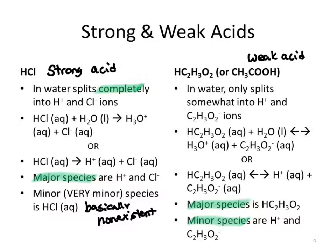In solution, we're only going to get a little bit of ionization — we won't see much hydrogen ion or acetate ion. We're mostly going to have intact acetic acid molecules left, as we saw with the beaker illustration in our 9.2 videos comparing hydrochloric acid and acetic acid as electrolytes. Strong acids dissociate completely and are strong electrolytes; weak acids ionize only slightly and are weak electrolytes.